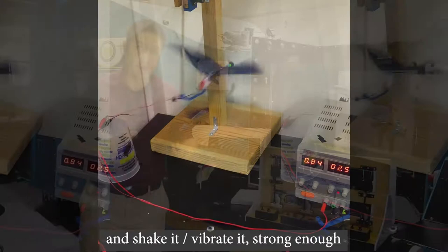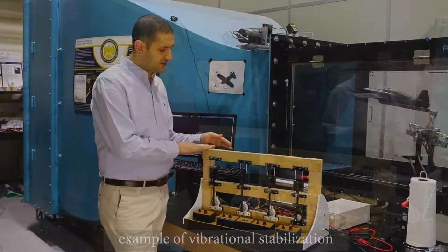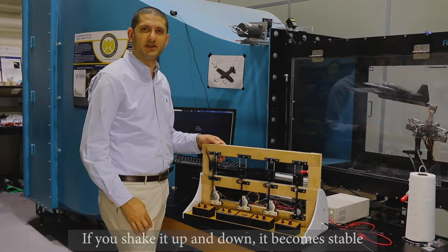Let me show you a very interesting and expressive example of vibrational stabilization. This is an inverted pendulum. The upper equilibrium point is not stable because of gravity. If you shake it up and down, it becomes stable. Notice how it resists disturbance. It emulates a spring action.